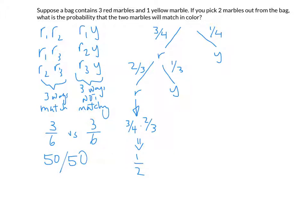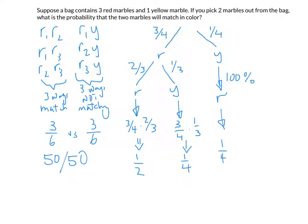The other options: if you get red then yellow, that's three-quarters times one-third, or one-quarter of the time. If you drew yellow first, then it's 100% that the next draw is red — since all three remaining marbles are red — so that happens one-quarter of the time. One-quarter plus one-quarter gives one-half, so it's a half versus a half: a 50/50 proposition.